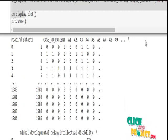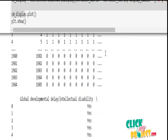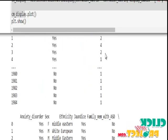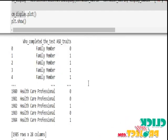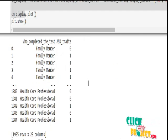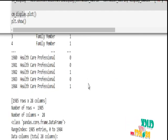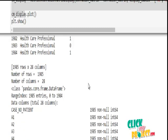First, we're reading the dataset. The parameters are case number, A1 through A9, global development delay, social behavior issues, and case details. These are the dataset columns. The number of rows in the dataset is 1,985 and the number of columns is 28.